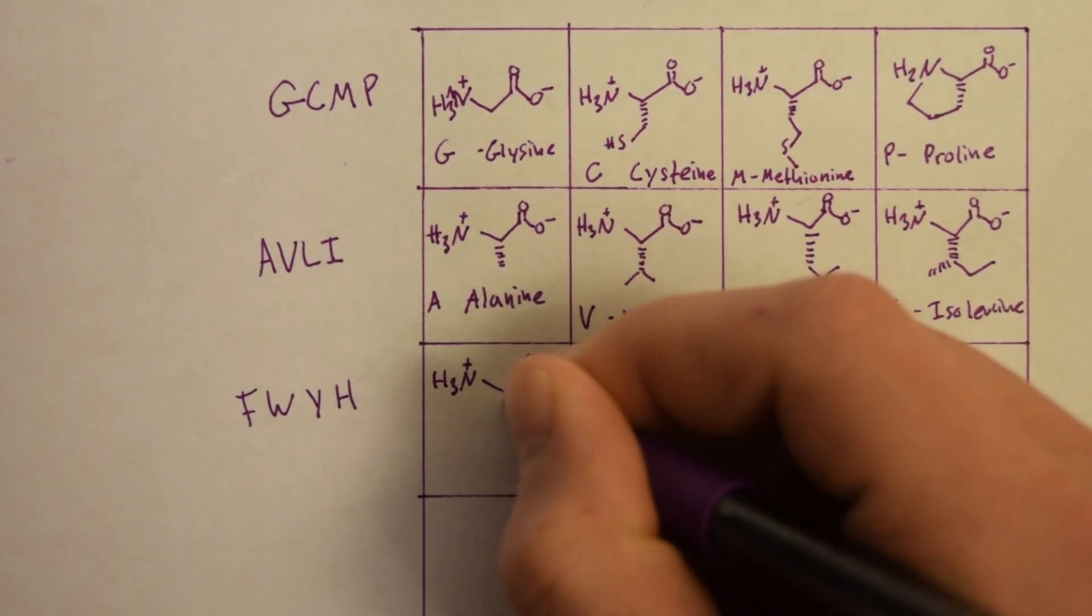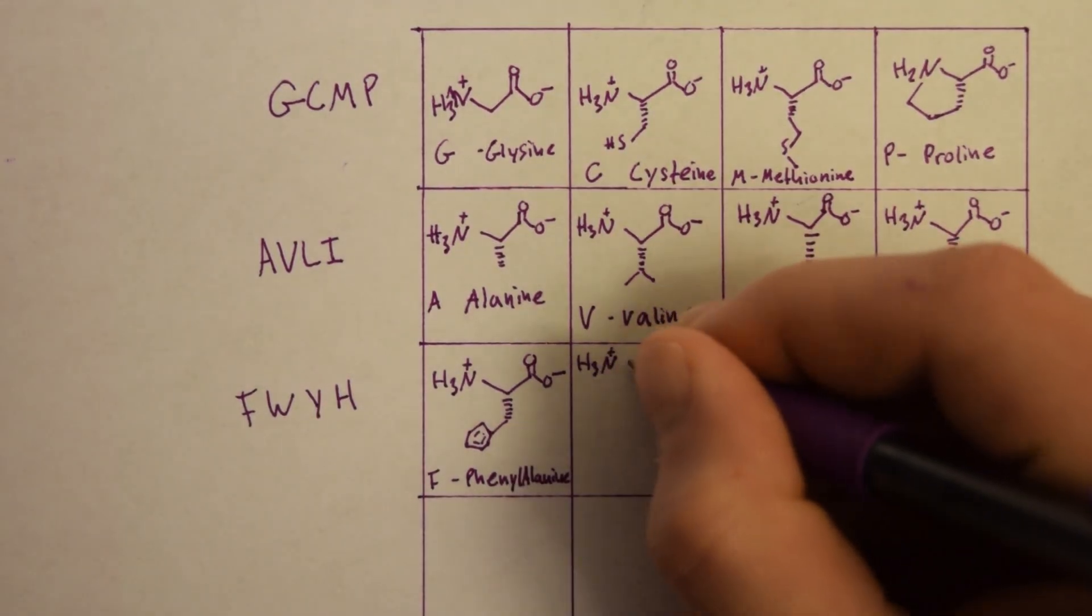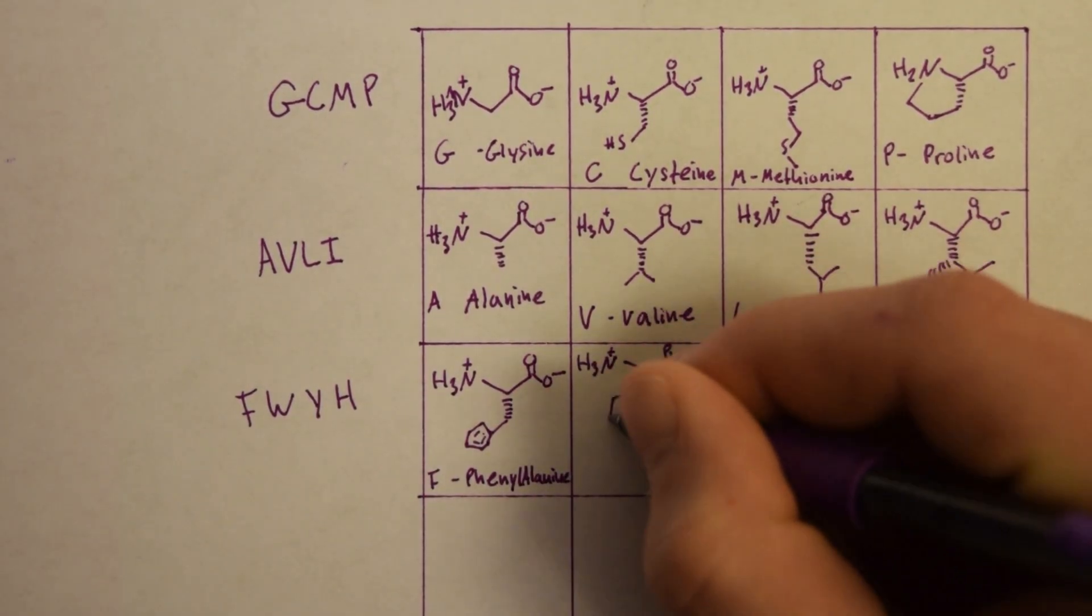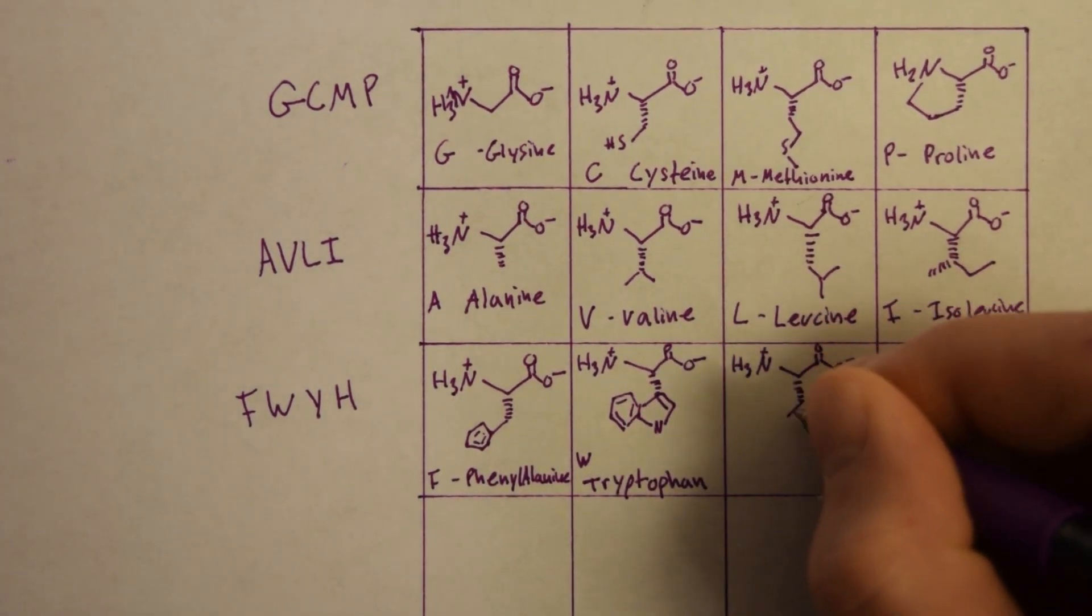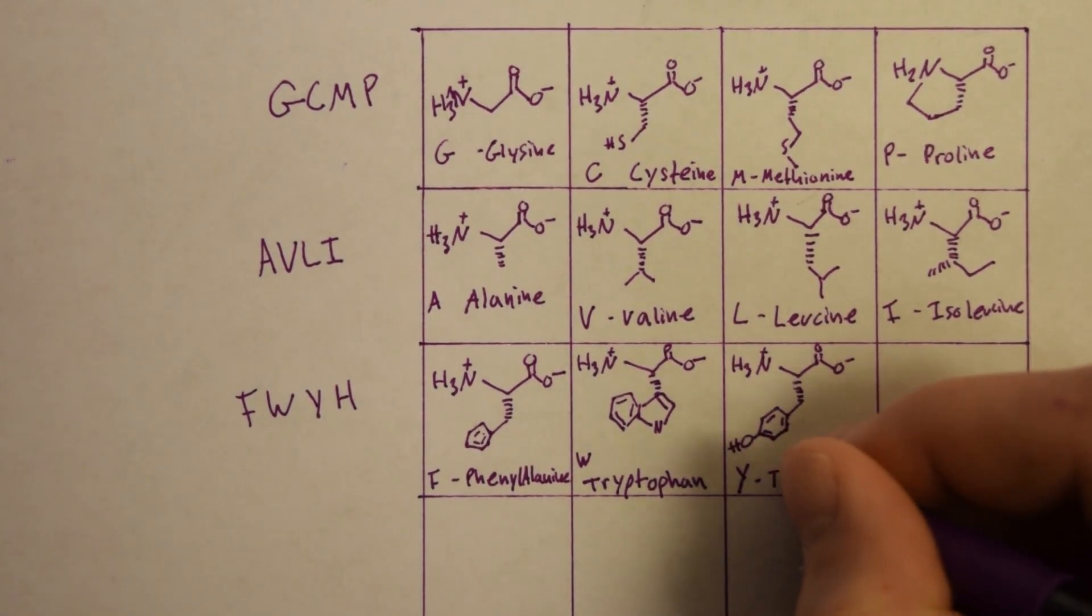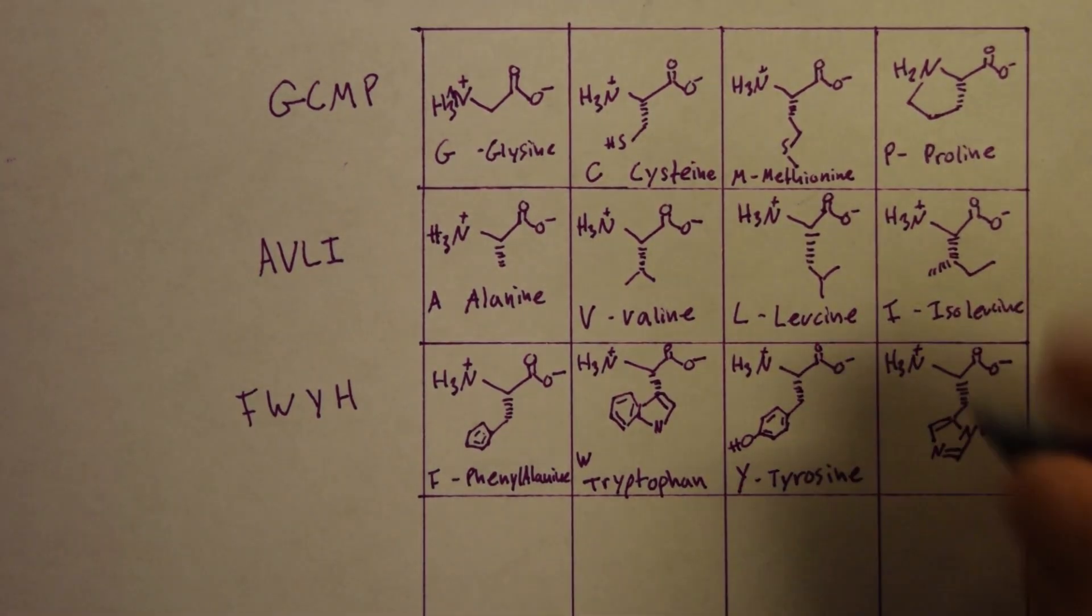Next line is FWYH. Phenylalanine has a benzene ring on it. Tryptophan has two rings in it. Tyrosine looks just like phenylalanine but you add an alcohol at the para carbon. Histidine has one five-membered ring with two nitrogens in it.